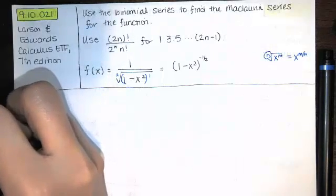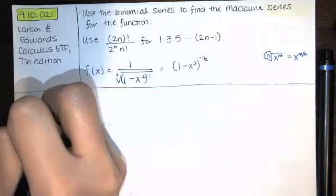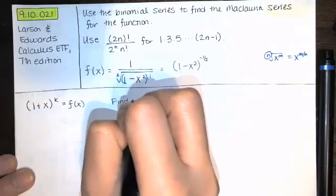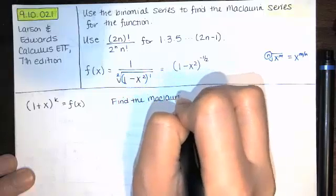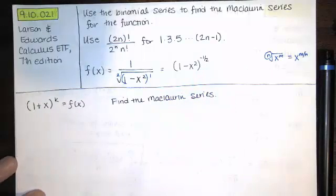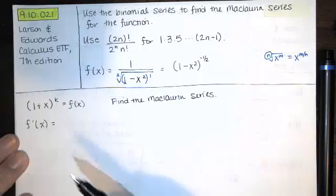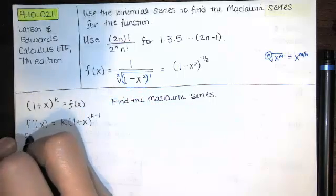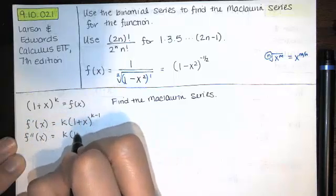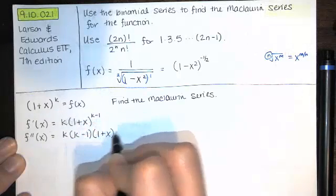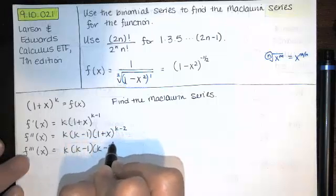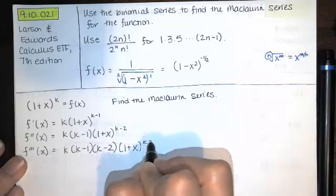Let's say we've got a binomial function like this: 1 plus x raised to the k power, and that's our f of x. We want to find the Maclaurin series for that function. In order to do that we need to compute some derivatives. The derivative of (x plus 1) to some power comes from the power rule — we bring the power down and multiply by 1 plus x to the 1 less power. Taking more derivatives continues this same pattern.